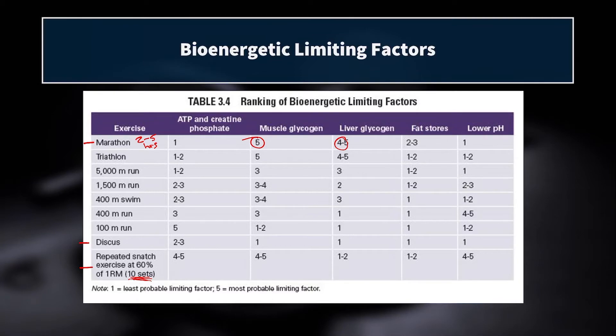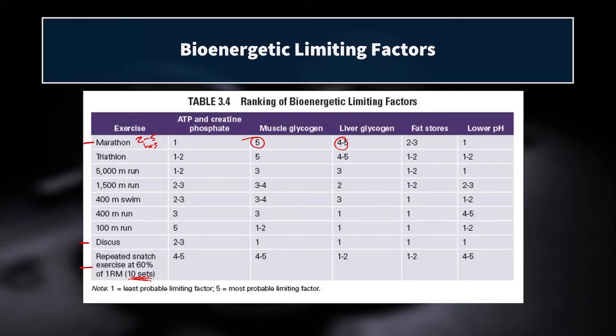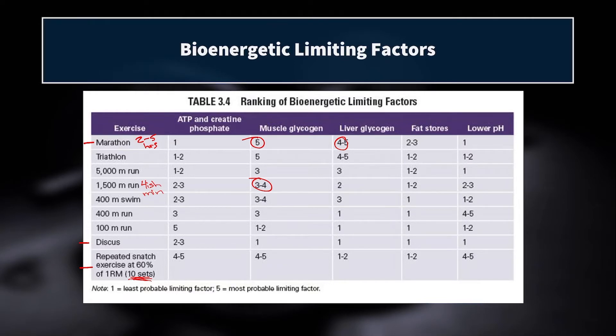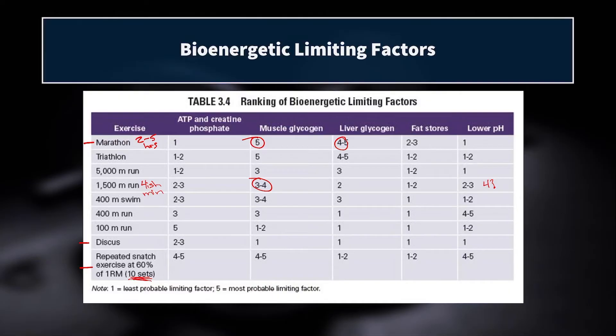Moving down to the 1500 meters: ATP and creatine phosphate might limit you a little. Really, it's going to be muscle glycogen — you won't stop in a 1500 due to running out of glycogen, but if you haven't topped it off, it could limit your race speed. Lower pH is definitely a contributor — maybe higher than a three, because especially at the end of a 1500, you can really go lactic as you tie up during that last 400 meters.